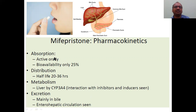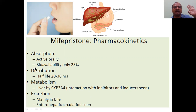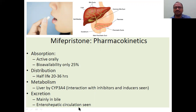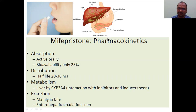Pharmacokinetics: mifepristone is active orally but bioavailability is very low - only 25%. If you take 100mg orally, only 25mg enters the blood; 75% is wasted. Distribution: half-life is 20 to 36 hours. Metabolism is by the liver. Excretion is mainly through bile juice - it enters the intestine and then fecal matter via enterohepatic circulation.